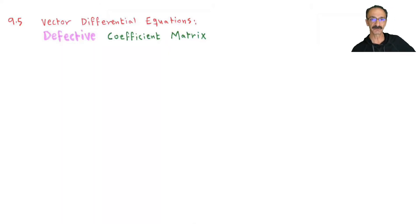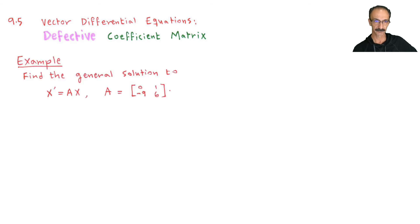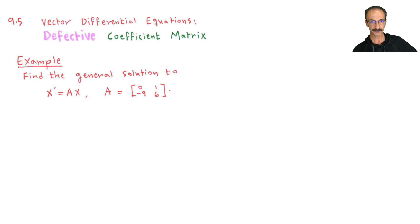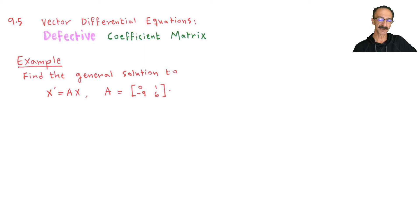Defective coefficient matrix — find the general solution. I'll go through the main steps quickly and slow down when needed. We always start by finding lambdas and vectors, then move on from there.